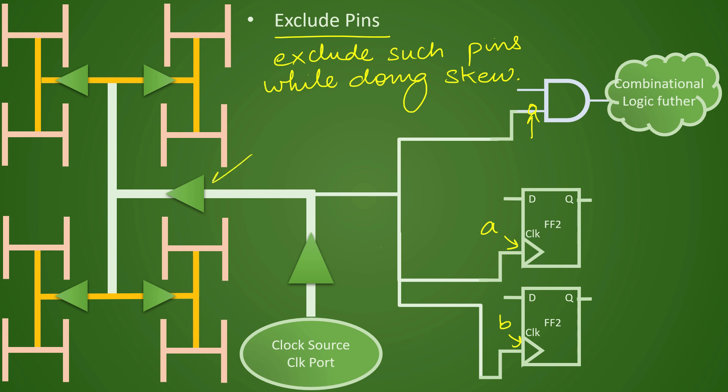What will happen is we have already understood in the skew that while doing the skew balancing tool will insert the buffers in the tree like this. So this is one buffer which tool has inserted with the intention that it has to balance the skew for this particular branch of H tree. Now what happens is if we specify this particular pin as an exclude pin then it will be excluded from skew balancing.